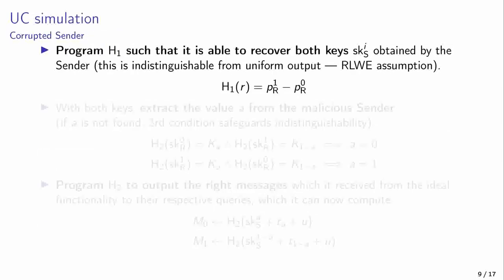In order to prove universal composable security, we must construct a simulator that simulates every adversary while remaining undetected to an external environment. For this proof, we will work in the random oracle model, which allows the simulator to observe and program queries to the oracle. So first, to simulate a corrupted sender, the simulator will program the oracle H1, such that it will be able to reconcile both shared keys. By making this slight change, the simulator is not detected, as distinguishing two RLWE samples from one RLWE sample and a random one requires breaking the RLWE assumption.